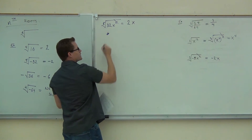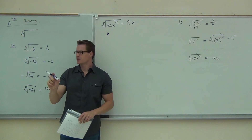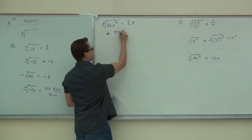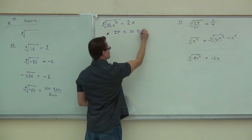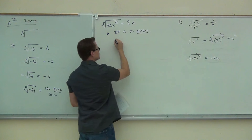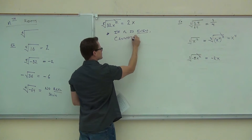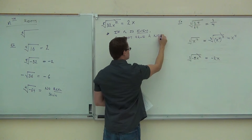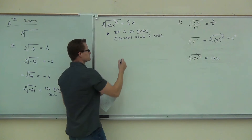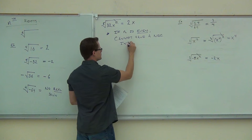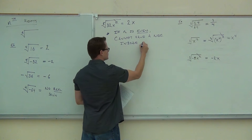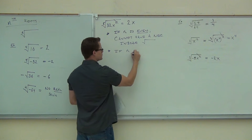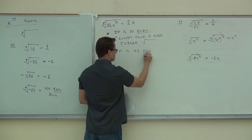A couple of notes we just learned: if n is even, you cannot have a negative inside the radical. If n is odd, though, that's fine.